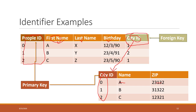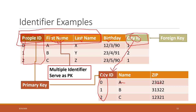On the people's table, we are using the people ID column as the only primary key — that is a single identifier. We could also use people ID, last name, and first name all three together as a primary key. If we use all three columns together, their combination would still be unique, so that is allowed. In that case, it is called a multiple identifier — one primary key made up of a combination of three columns.